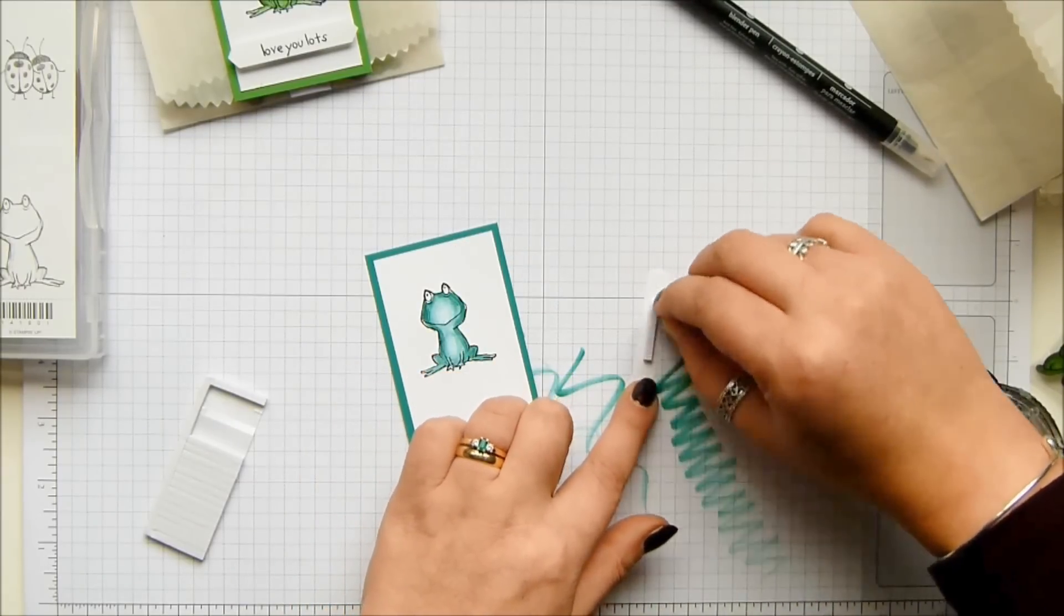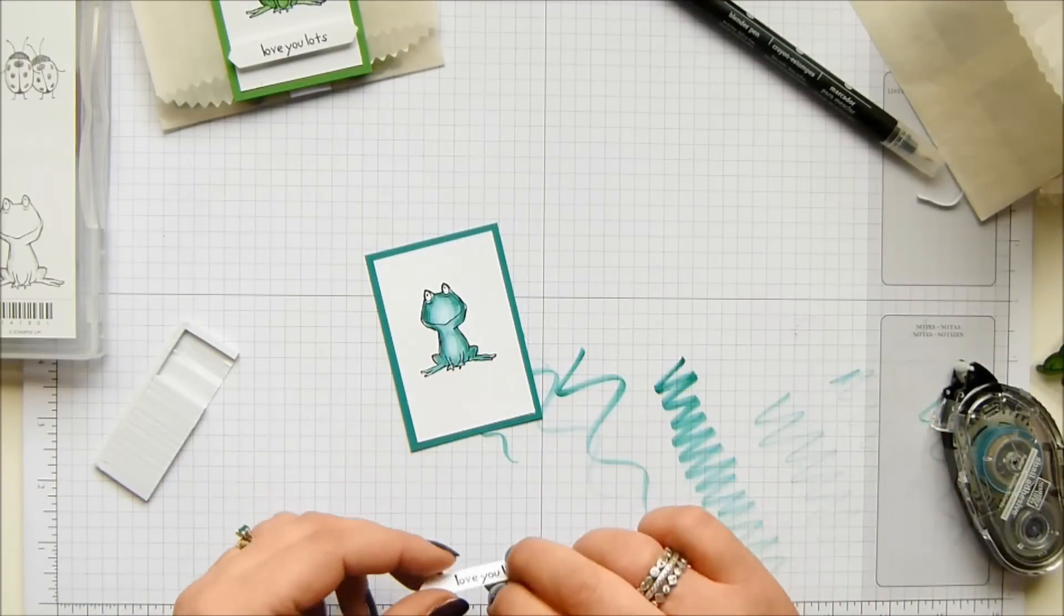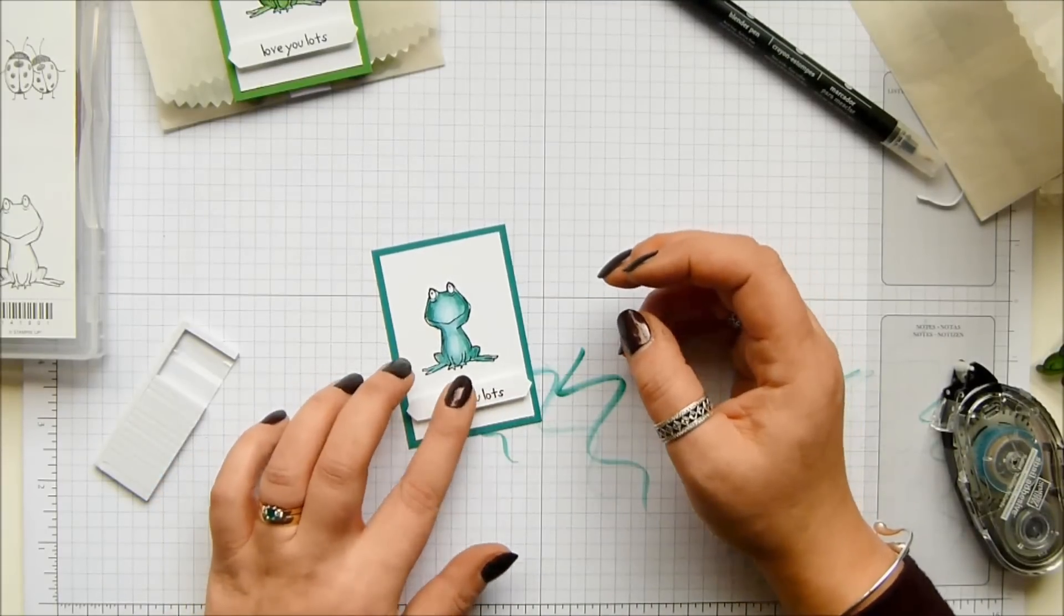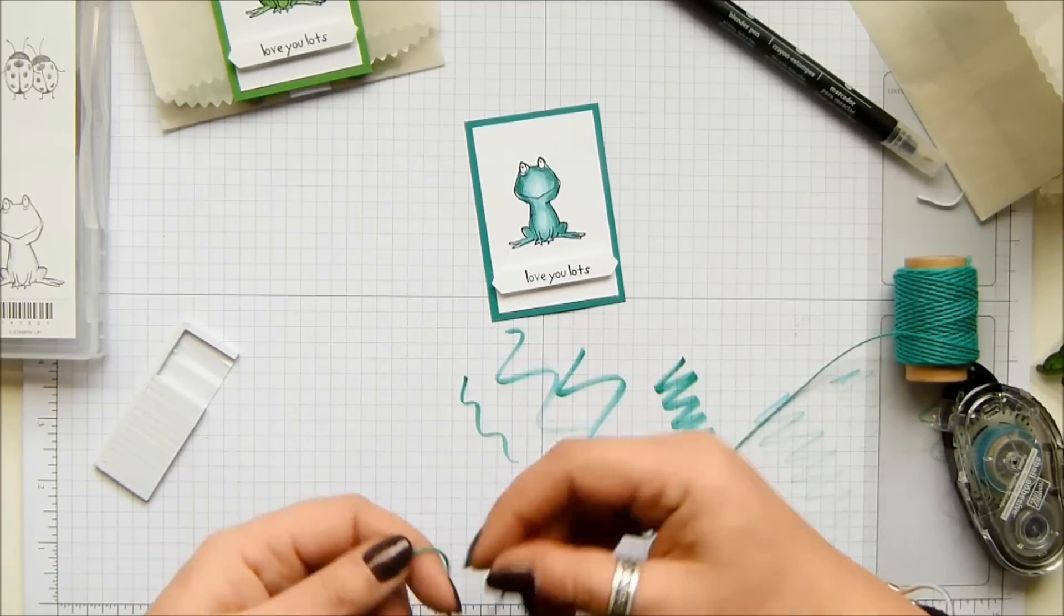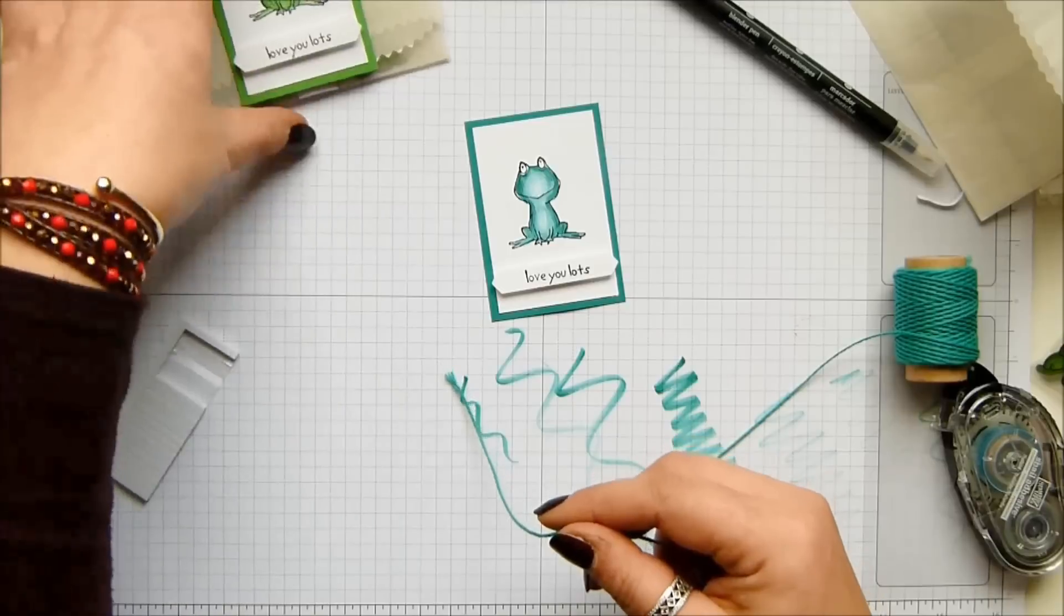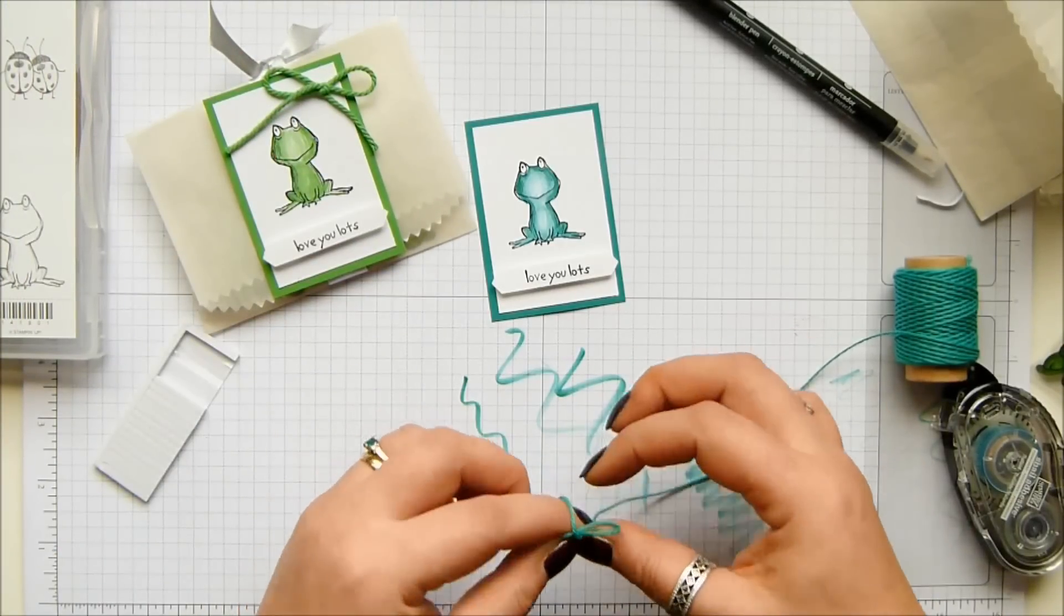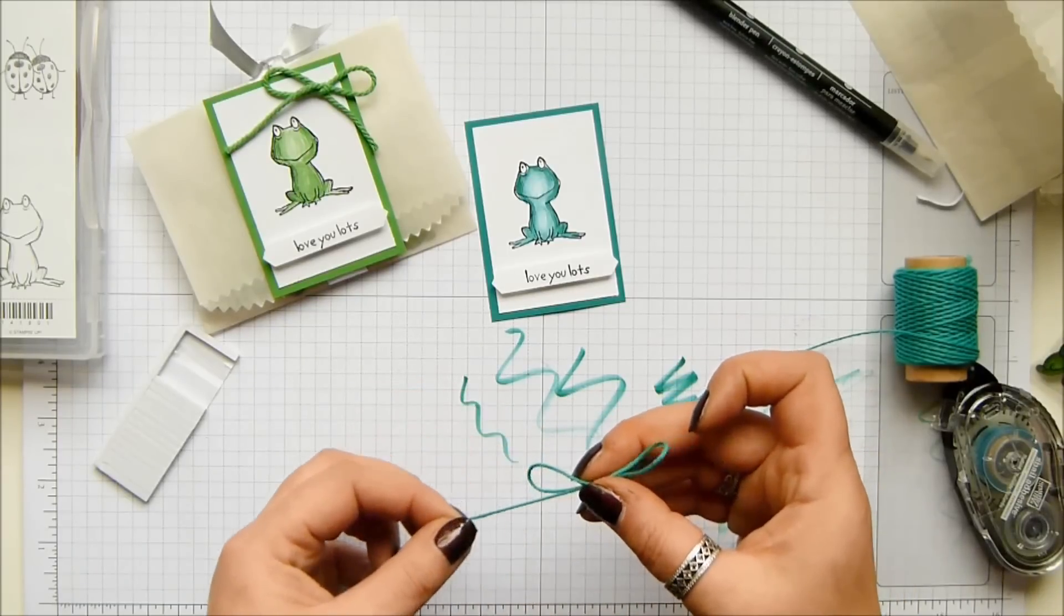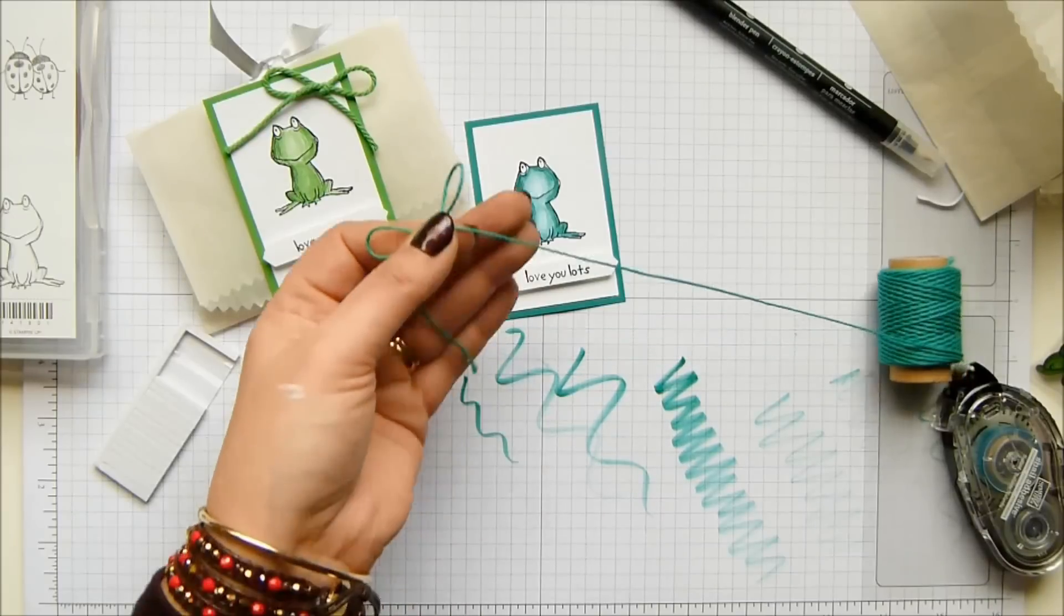These are the long foam strips for doing shaker cards, but obviously I'm not making a shaker card, but they are great for the Classic Label Punch. Baker's twine in Emerald Envy to match. So this is thinner than the Cucumber Crush. That's a thick baker's twine, this is just a regular twine. Let's grab some scissors to cut the ends off.